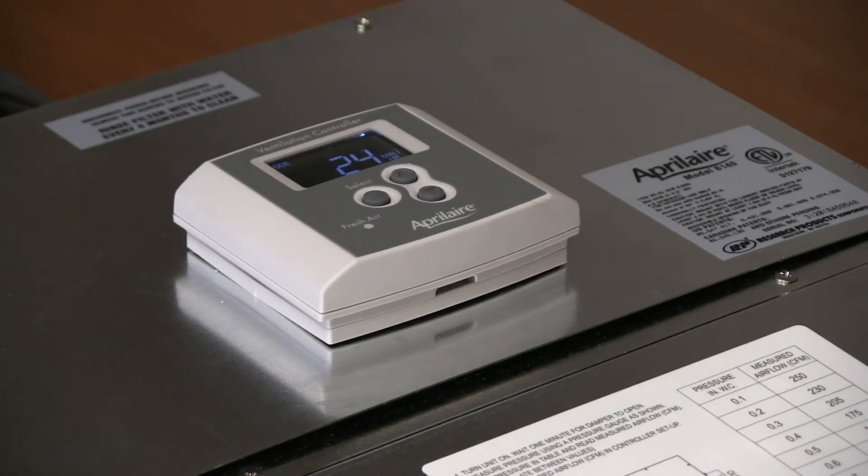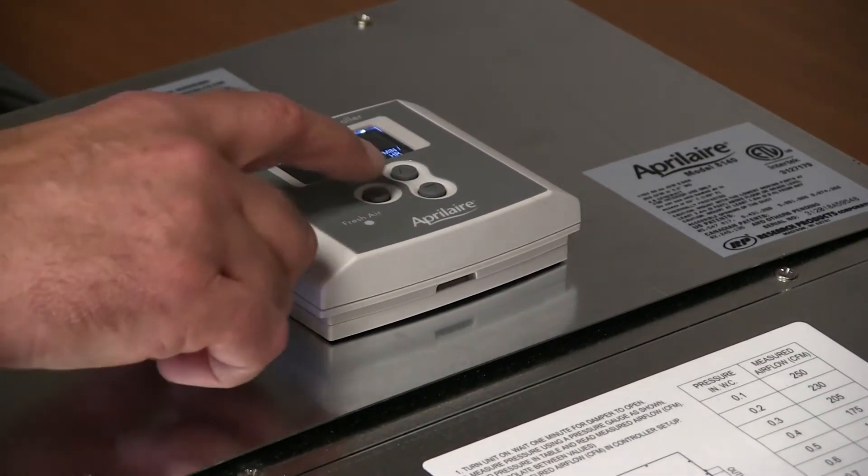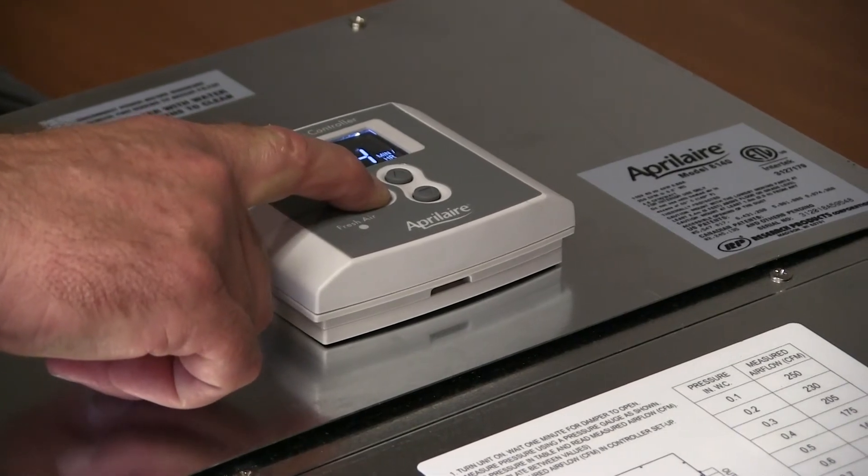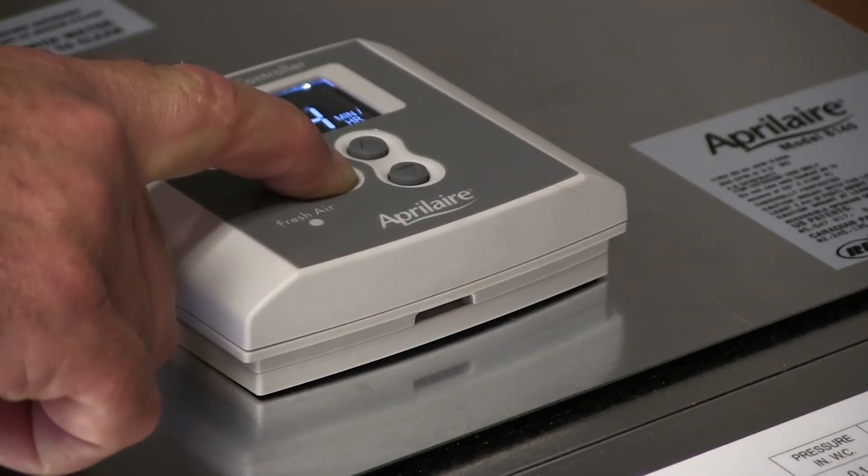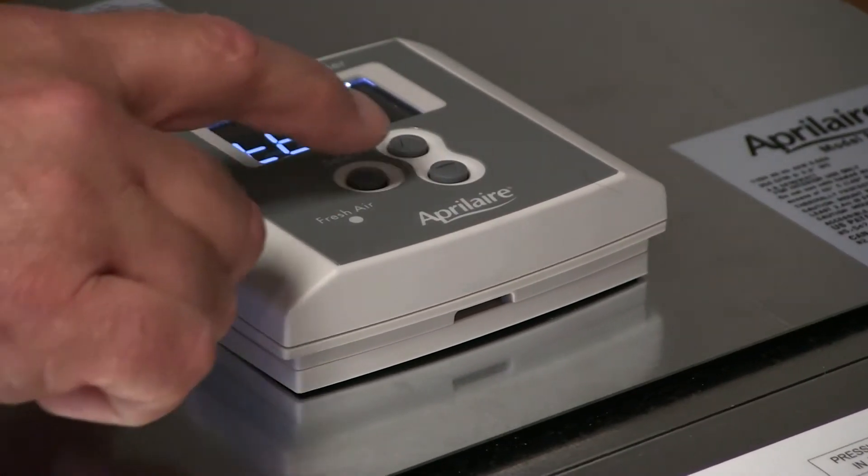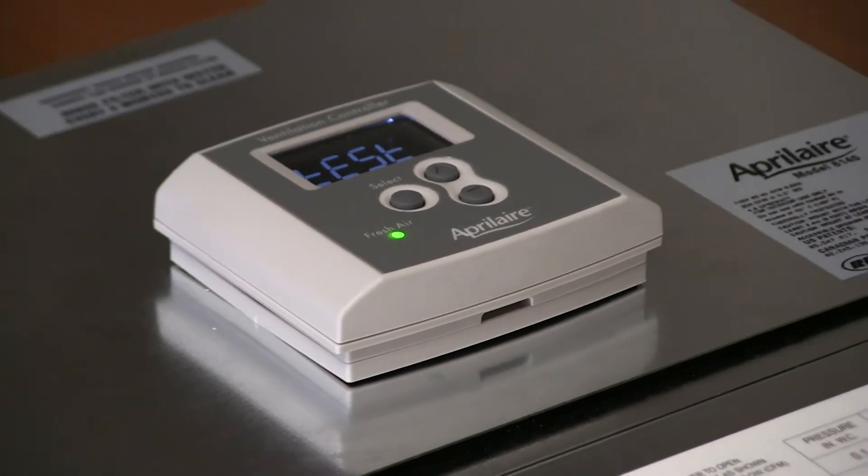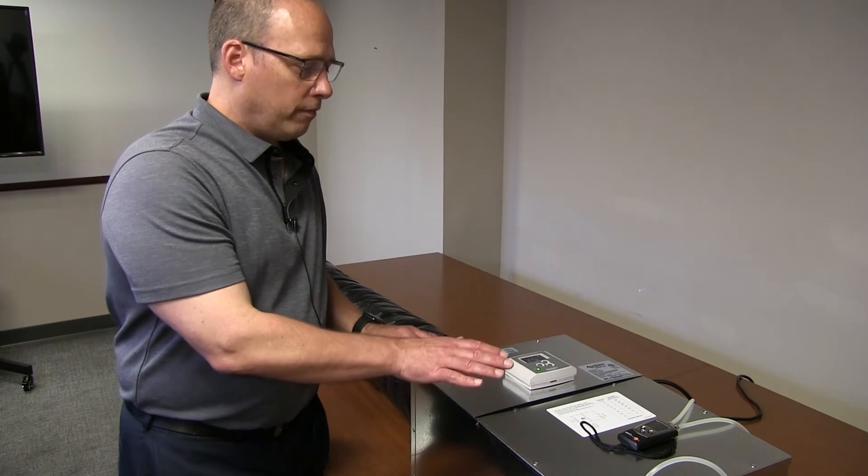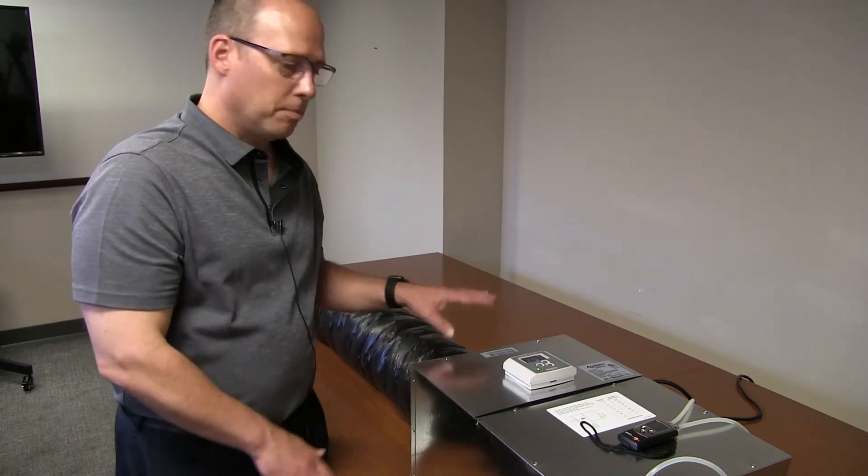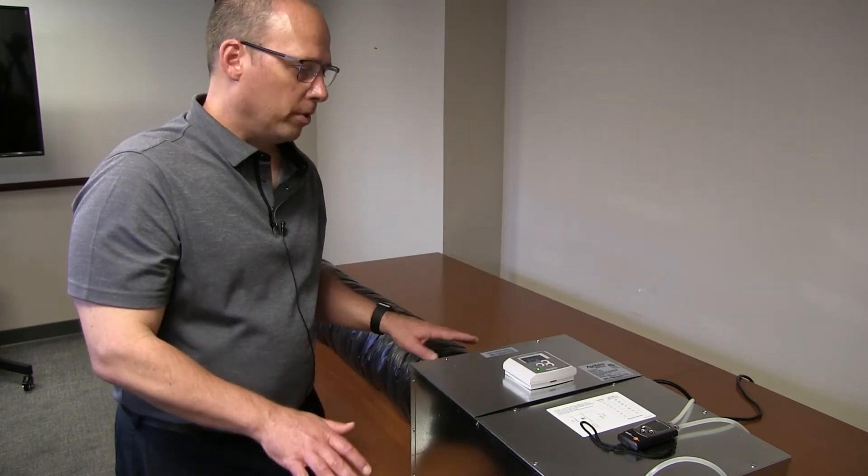So to test the unit, we've implemented a test procedure into the control of the 8140. To access that, we're just going to press and hold the select button, and that will give us two options, either setup or test. We toggle between those options using either the up or the down button. So we'll select test, and what that will do is it will start the fan. After the fan starts, you want to give the 8140 about 45 seconds, because there is a built-in damper into the 8140. That takes about 45 seconds at most to open.